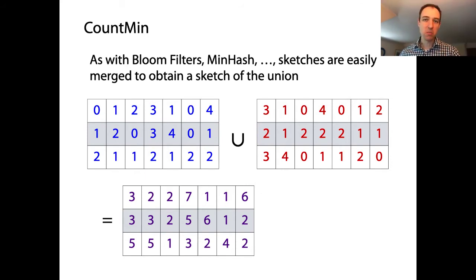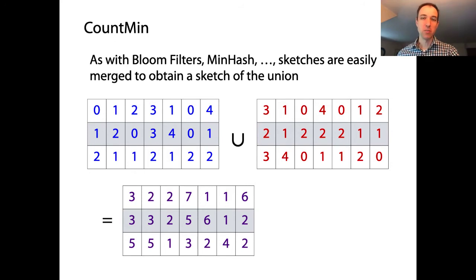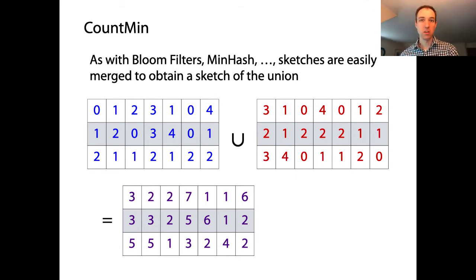If we have two sketches — blue and red — both seven columns and three rows with the same three hash functions, and we'd like a new sketch representing the union of those two data sets, we simply do element-wise addition and end up with this purple sketch. This is similar to merging two bloom filters of the same size via element-wise bitwise OR, or merging two bottom-k sketches via a merge sort.